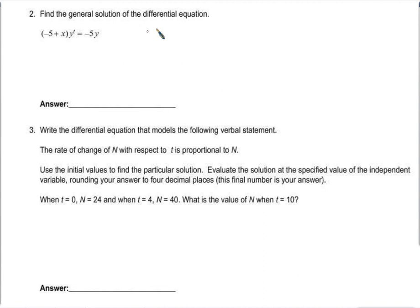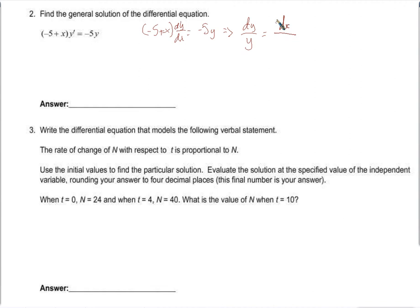Let's rewrite this as negative 5 plus x, dy/dx equals negative 5y. Separating the variables: dy over y equals negative 5 dx over negative 5 plus x. Taking the antiderivative gives the natural log of y equals negative 5 times the natural log of negative 5 plus x, plus c.